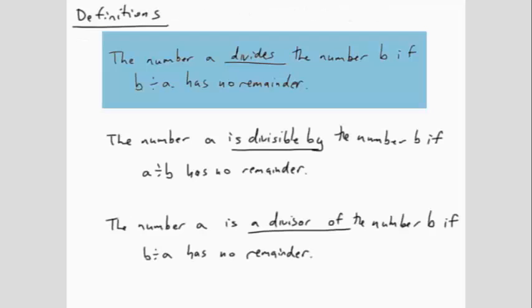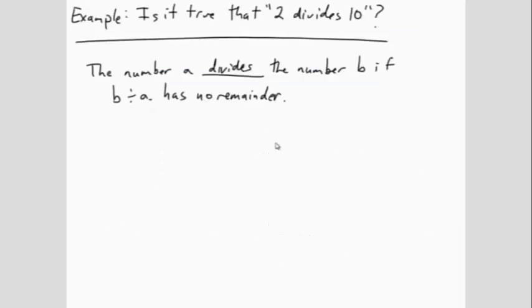The number A divides the number B if B divided by A has no remainder. By comparing the language, we can see that the number A is 2 and the number B is 10. So what we need to do is we need to replace these two variables with the specific values for this problem. B is 10 and A is 2.